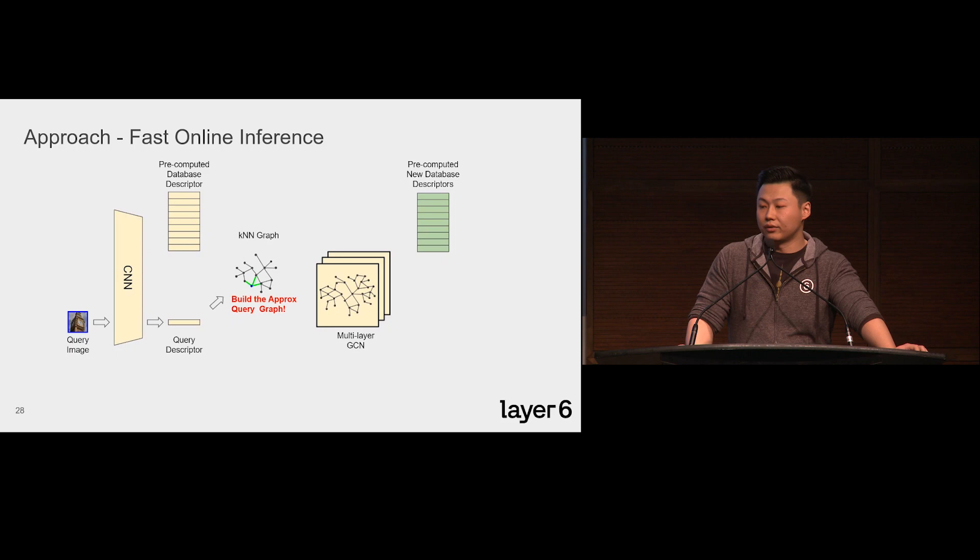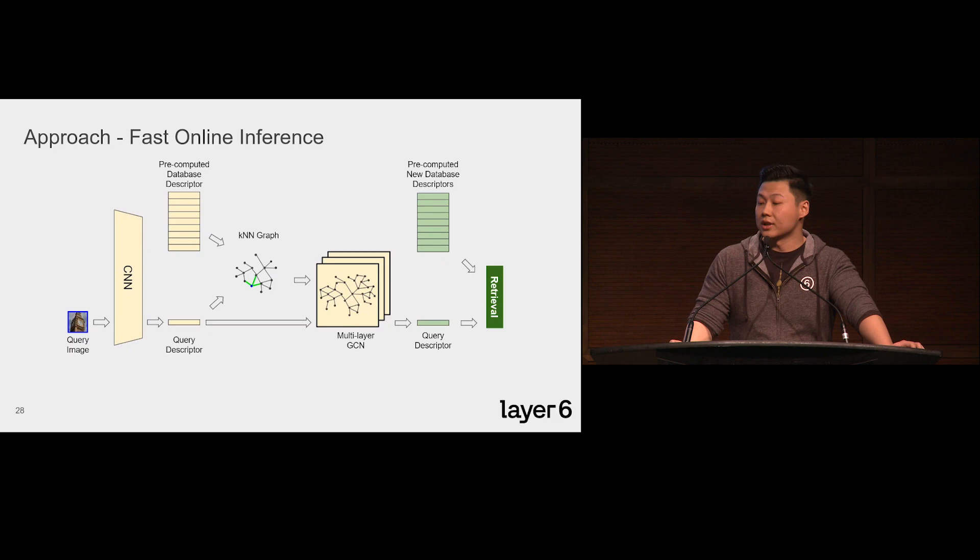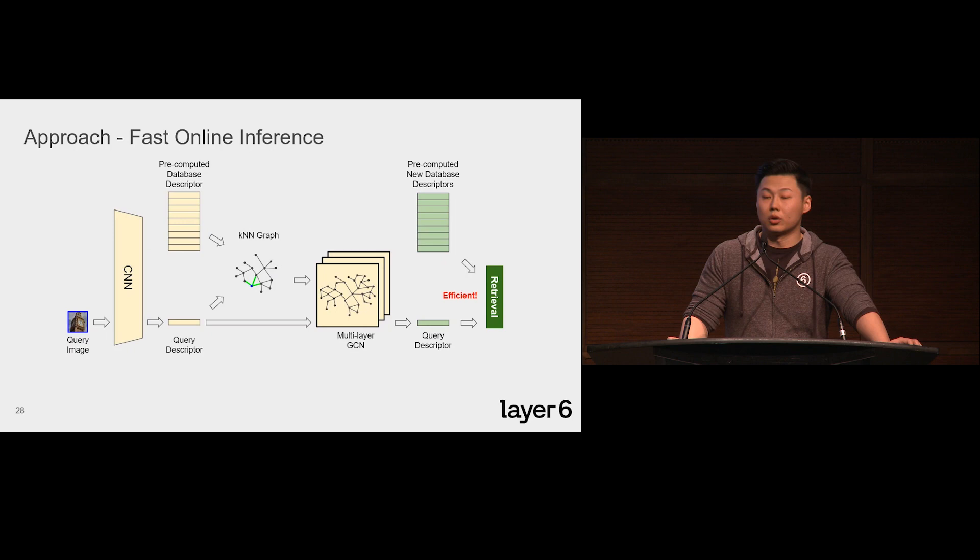That is how we trained our model, and then it comes to the online inference stage. To make it efficient, we cache the database KNN graph and the new database descriptors. When a new query comes in, we first get the descriptors from the CNN model, and then an approximate query graph is built by connecting this query to the pre-computed KNN graph. We only keep its first and second orders of neighbors because we believe the data manifold information has already been encoded into the new database descriptors. After we get a new descriptor for the query, the retrieval can still be done efficiently by inner product.